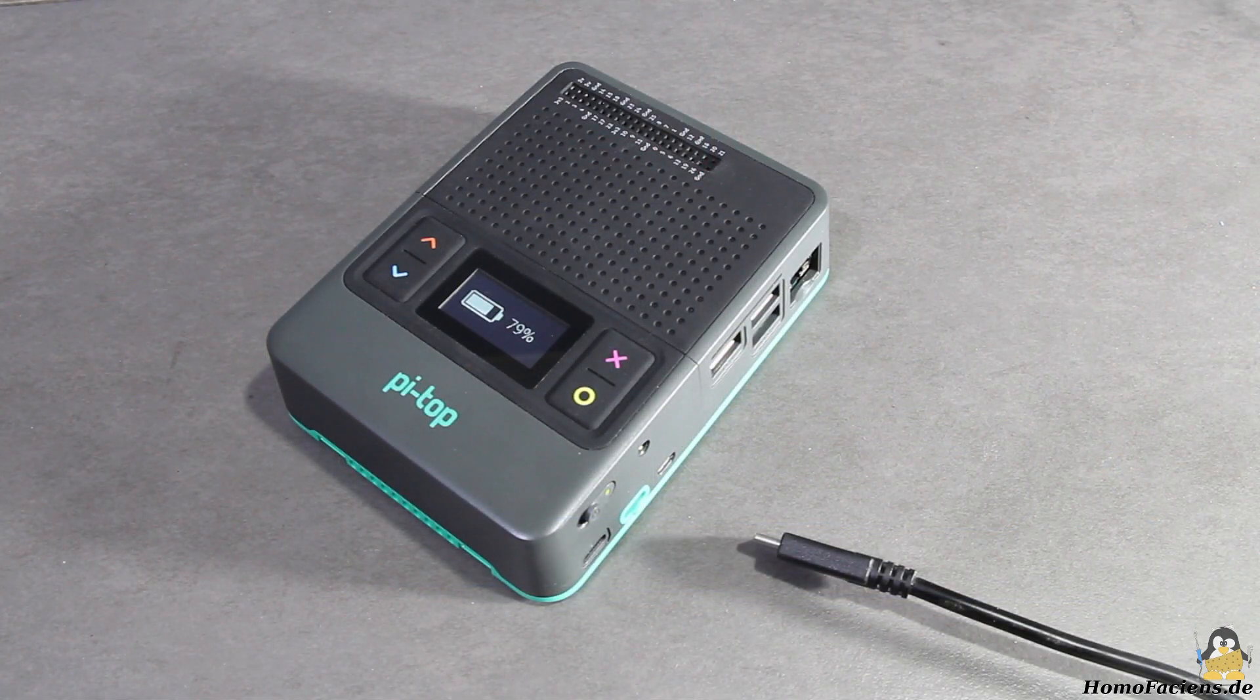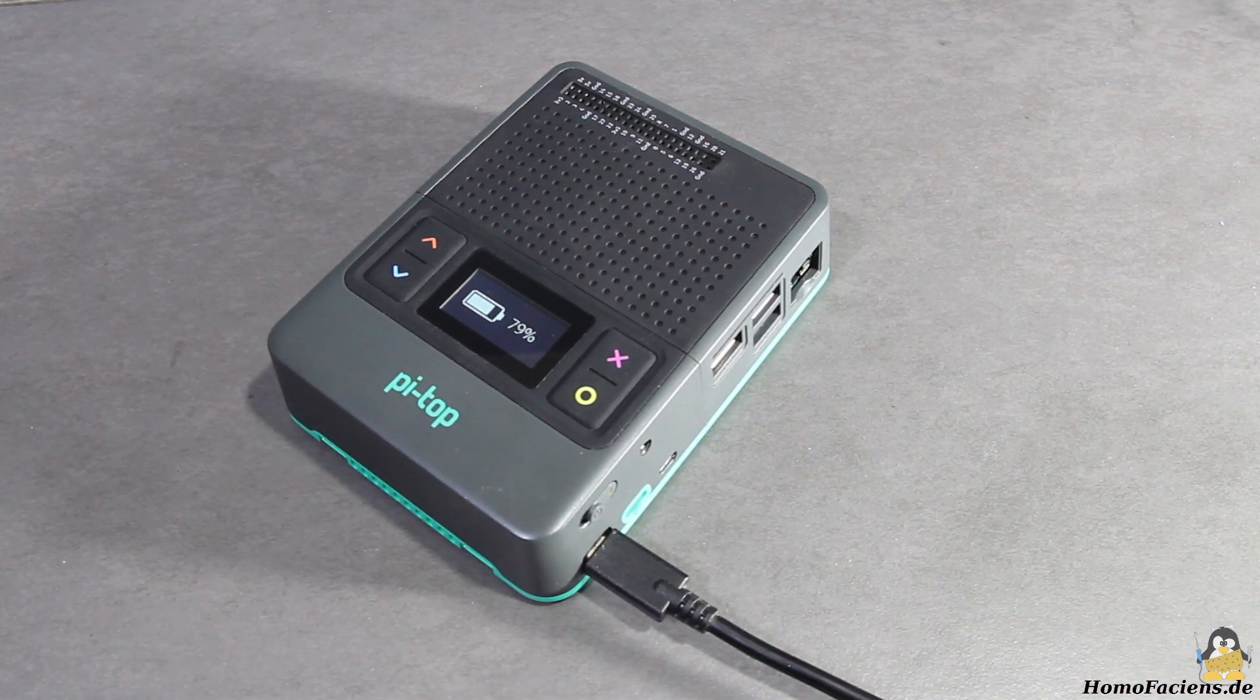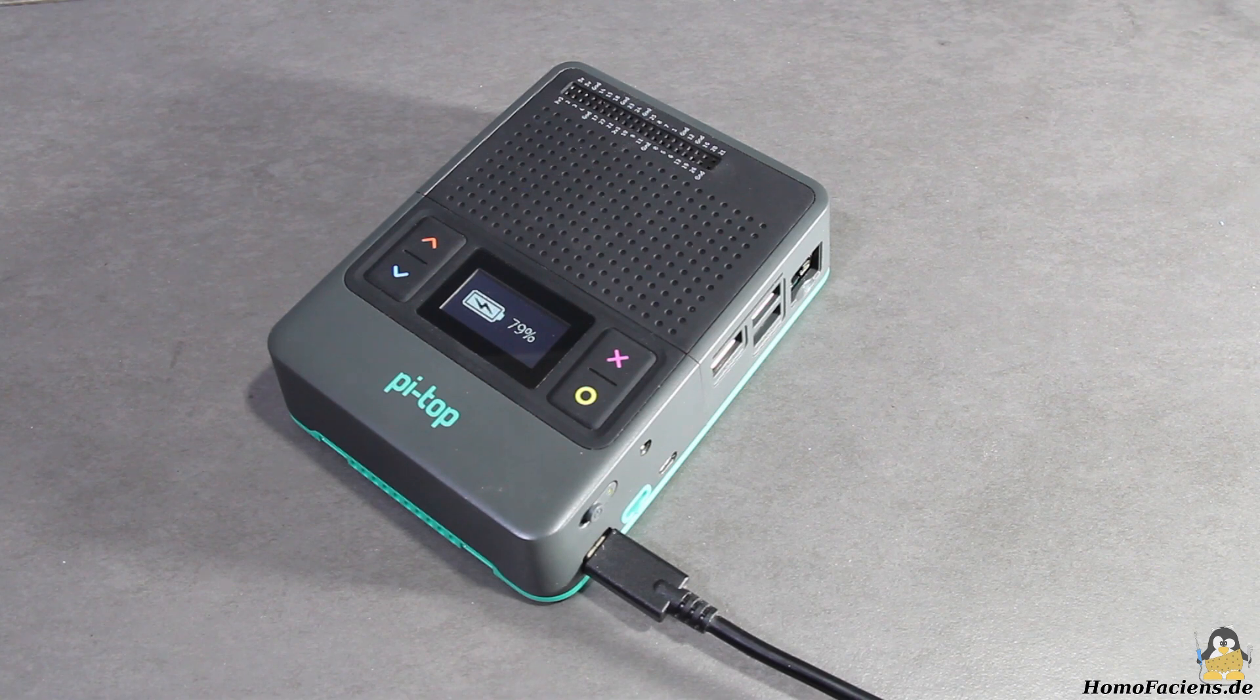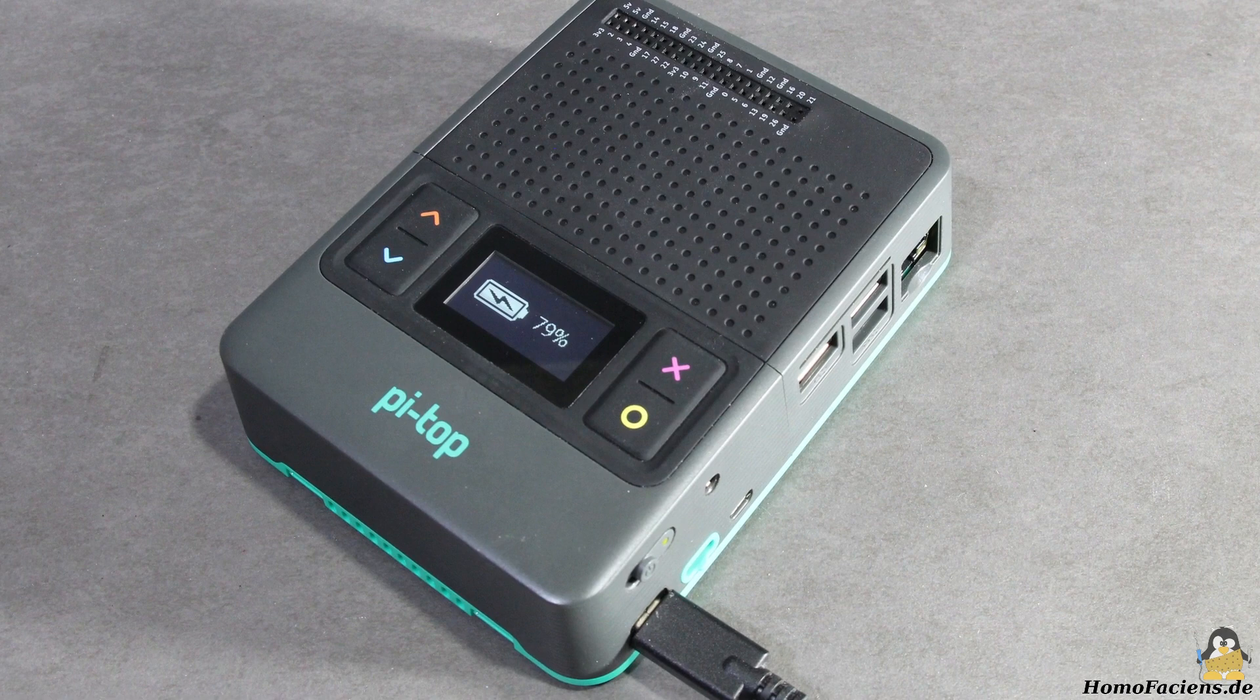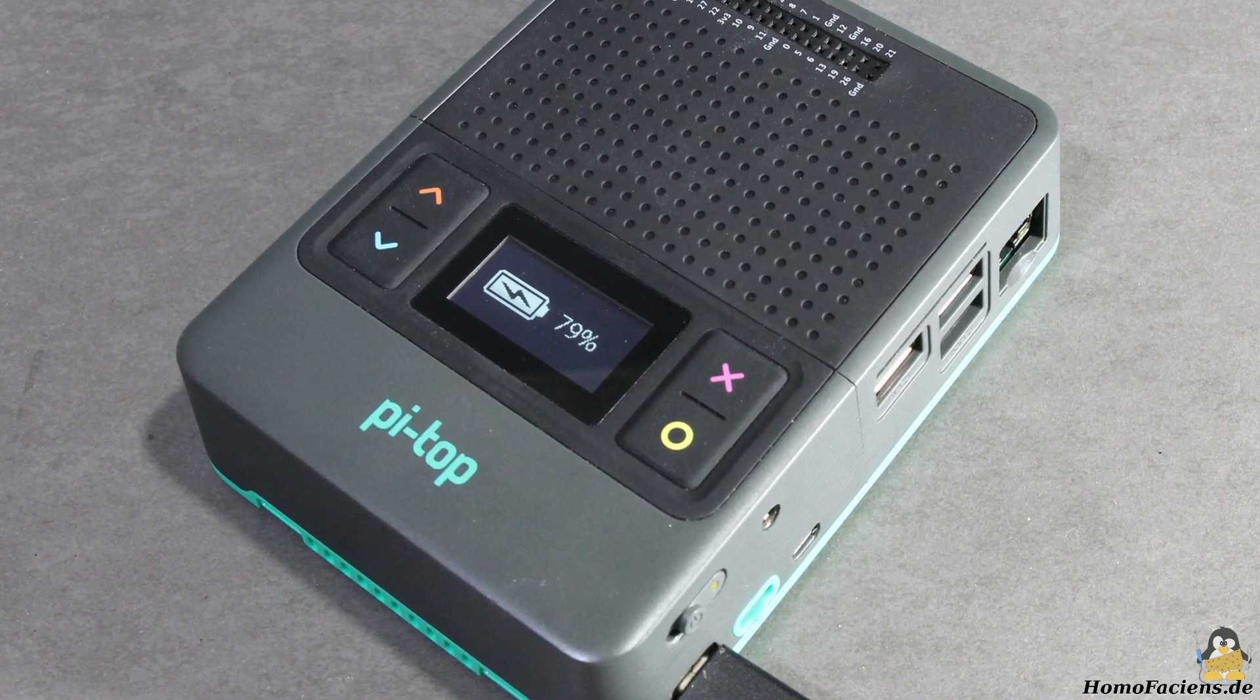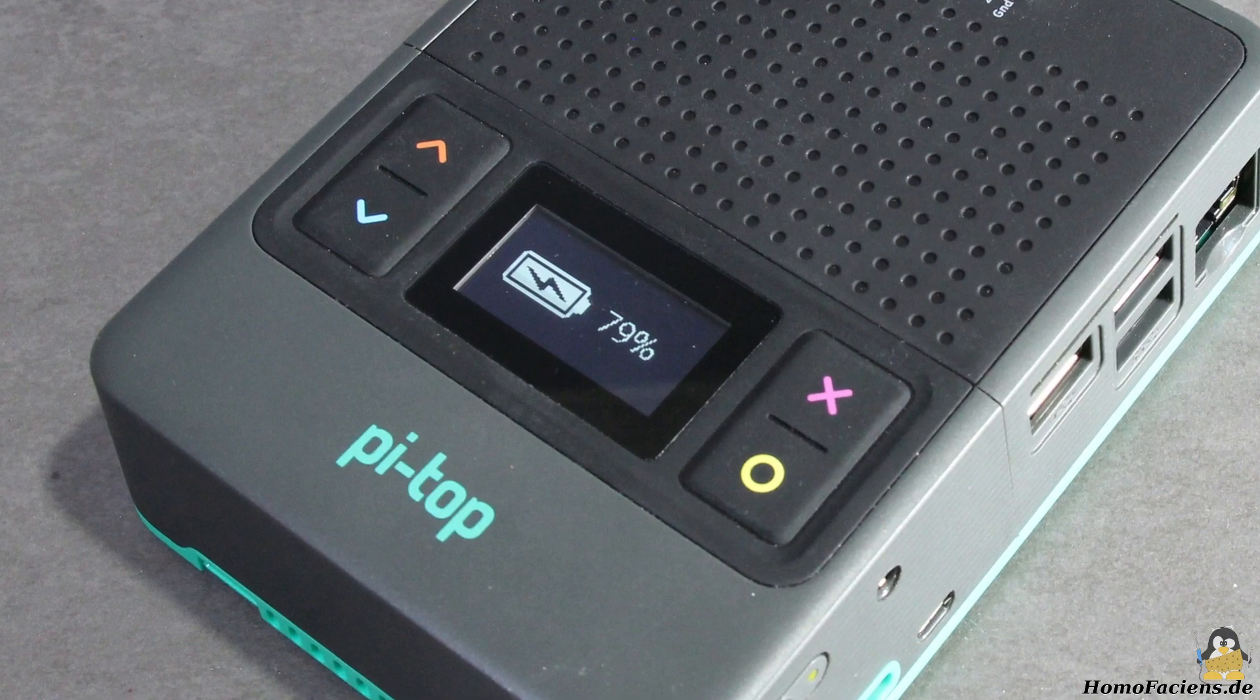The charging electronics is also included. As soon as the special power supply unit is connected, the Pi-Top starts the charging process. A command line program is integrated in the Pi-Top operating system which outputs the current battery parameters and so reduces the necessary programming work.